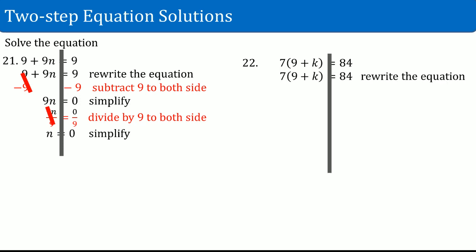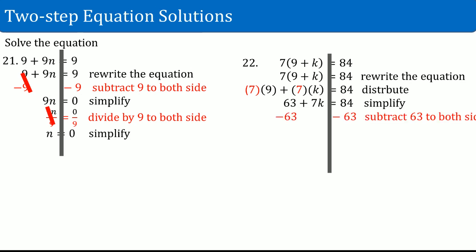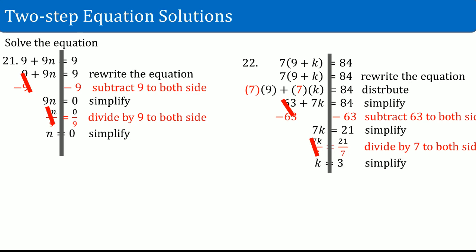Number twenty-two: 7(9 + k) equals 84. Rewrite the equation and draw a line straight down. There is a parentheses, so distribute. It should be 7 times 9 plus 7 times k. 7 times 9 simplifies to 63; 7 times k is 7k. So you have 63 plus 7k equals 84. Deal with the add 63 first — subtract 63 from both sides. 63 subtract 63 cancels out, leaving 7k. 84 minus 63 is 21. So 7k equals 21. Divide by 7 on both sides — 7 over 7 cancels out. On the left-hand side you get k. 21 divided by 7 is 3.